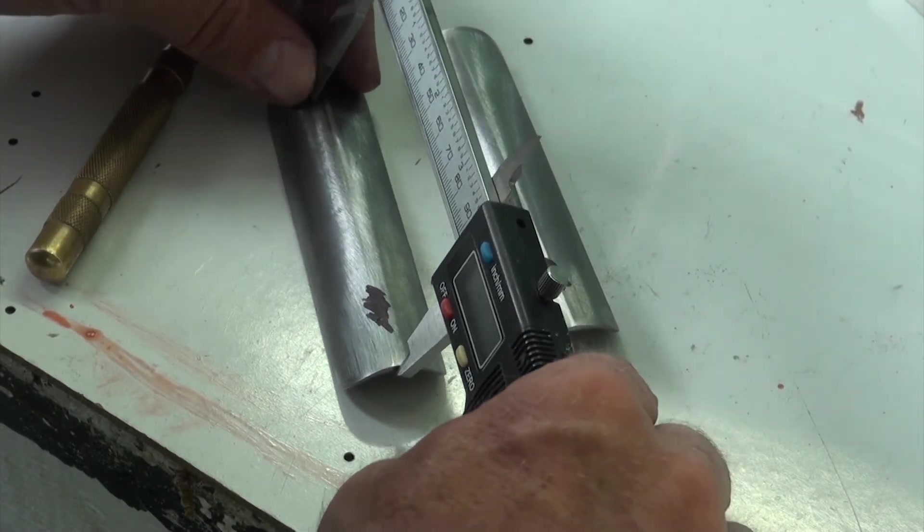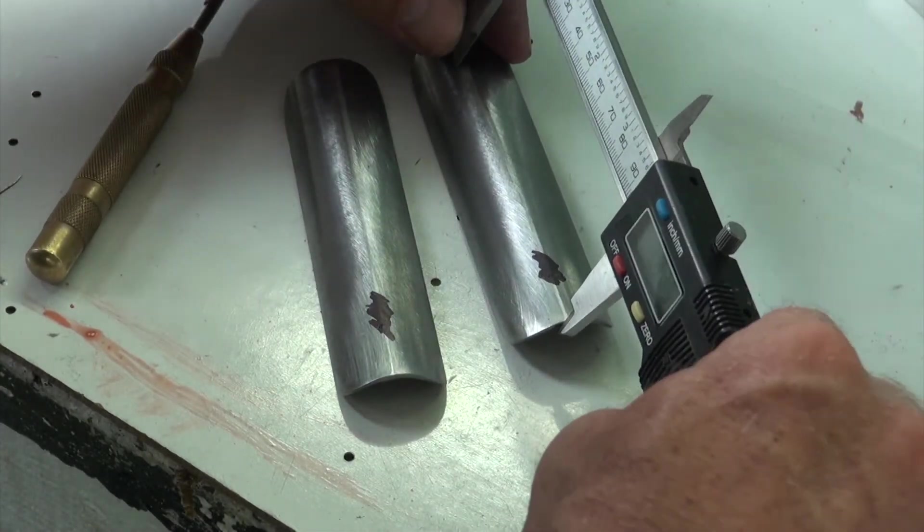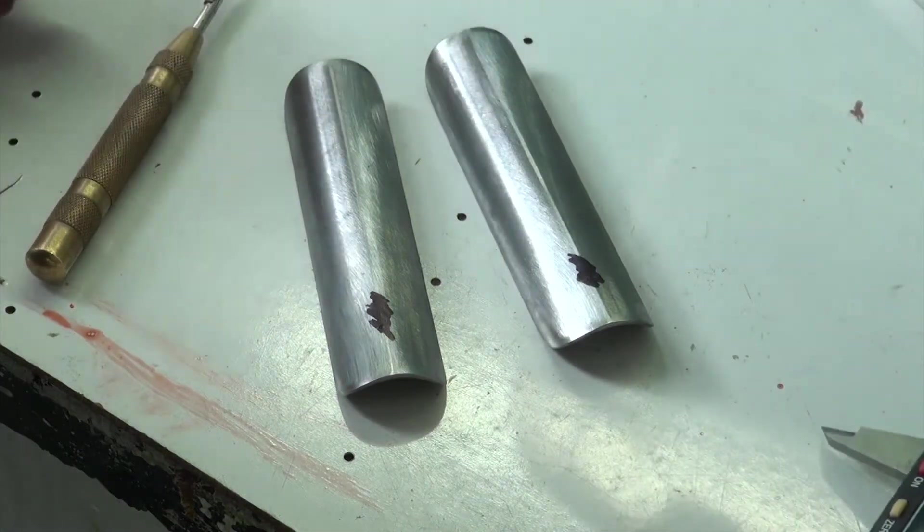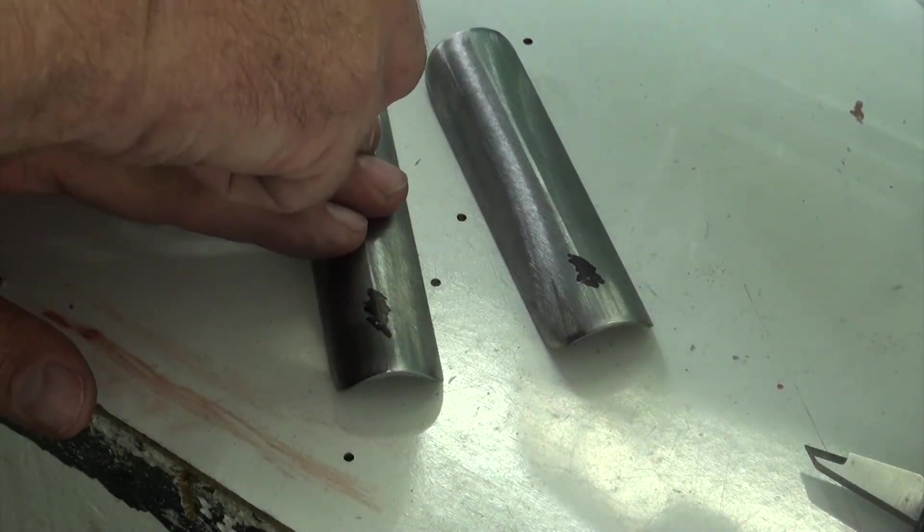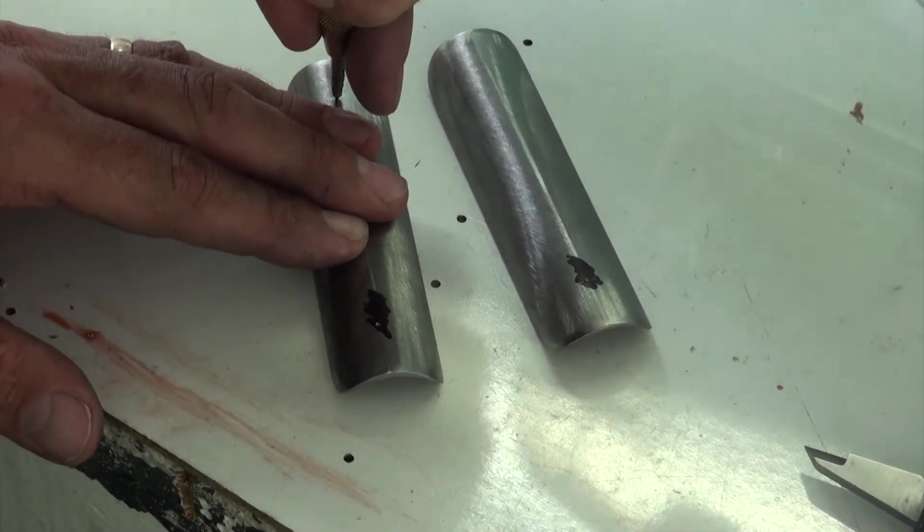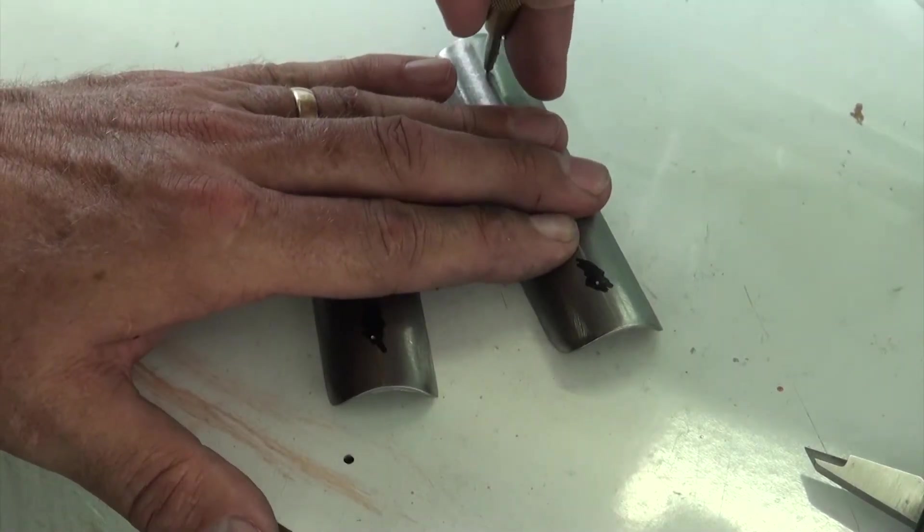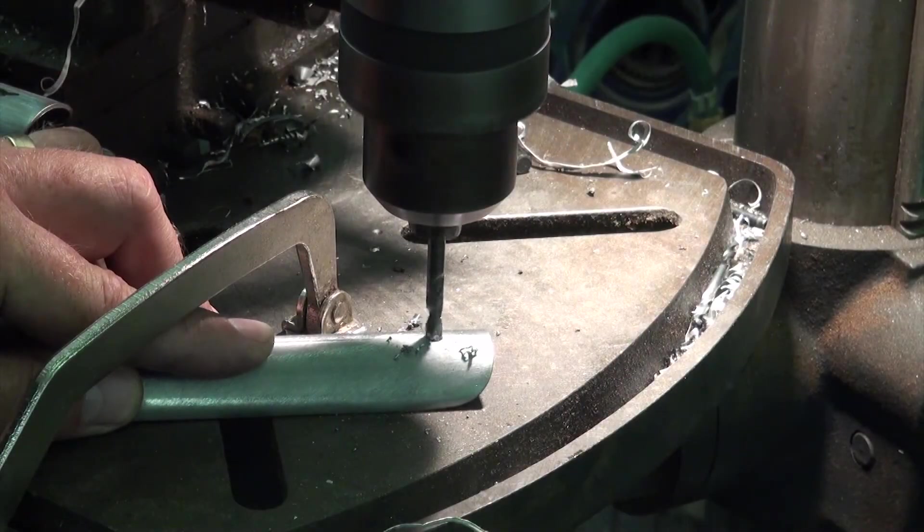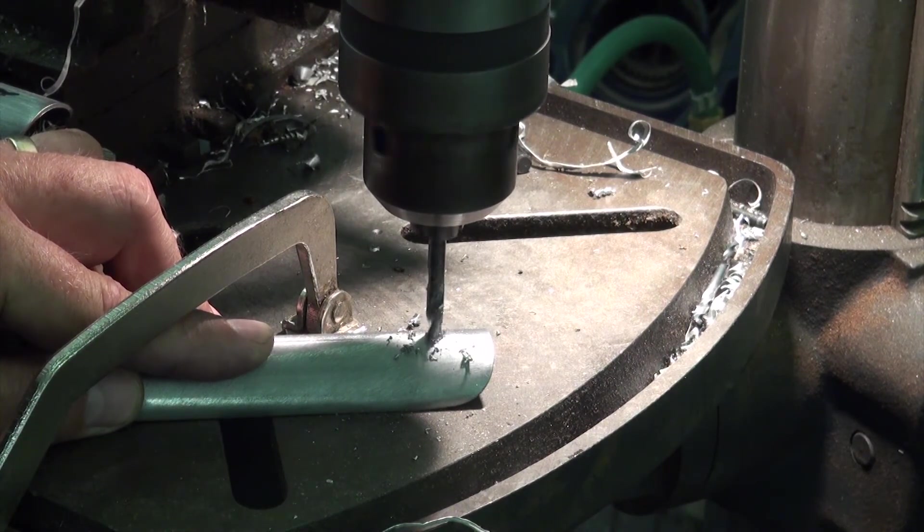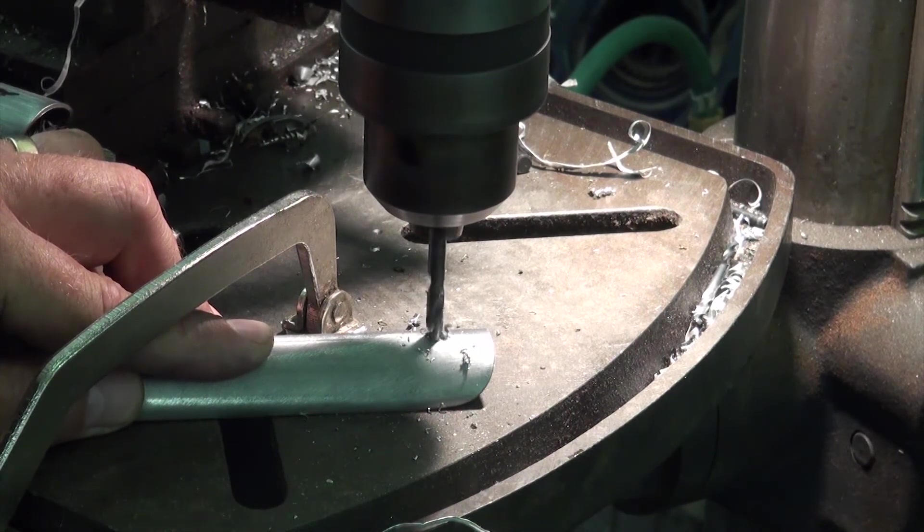Once we have the hole locations marked, we can center punch the tubes. Because the tubes are convex, it can be difficult to keep the drill bit aligned without a good center punch mark. Next, we can take the keel pockets to the drill press and using a 3/16 inch drill bit, drill through at each one of the marked locations.